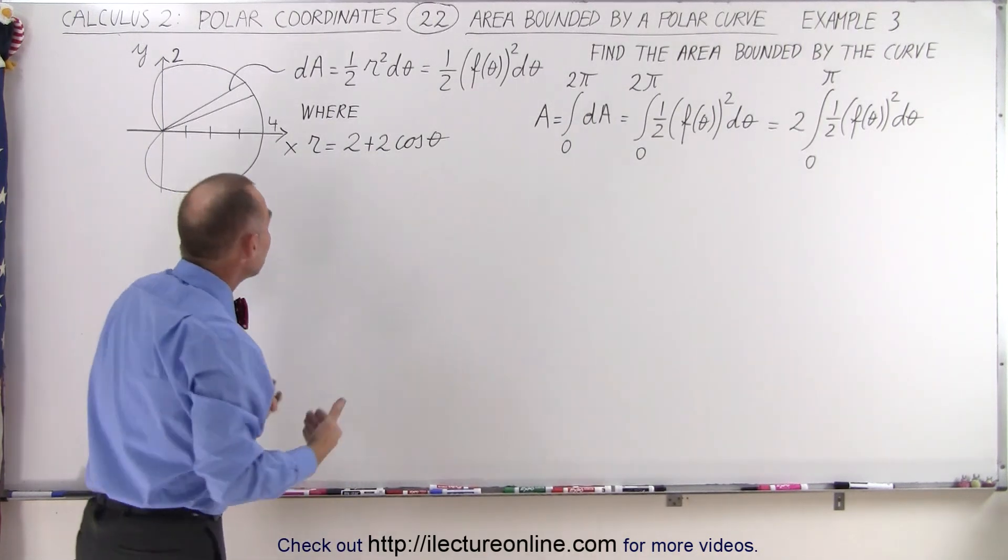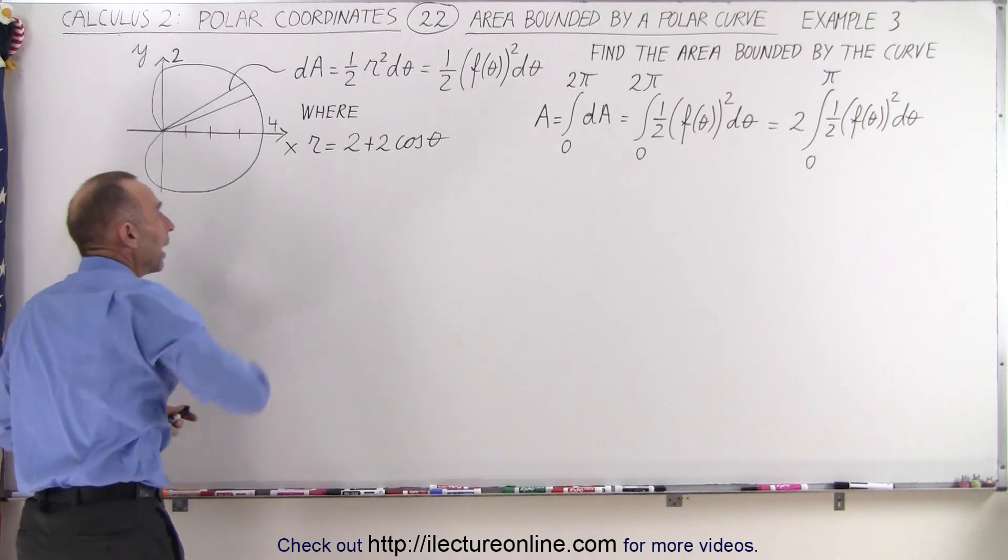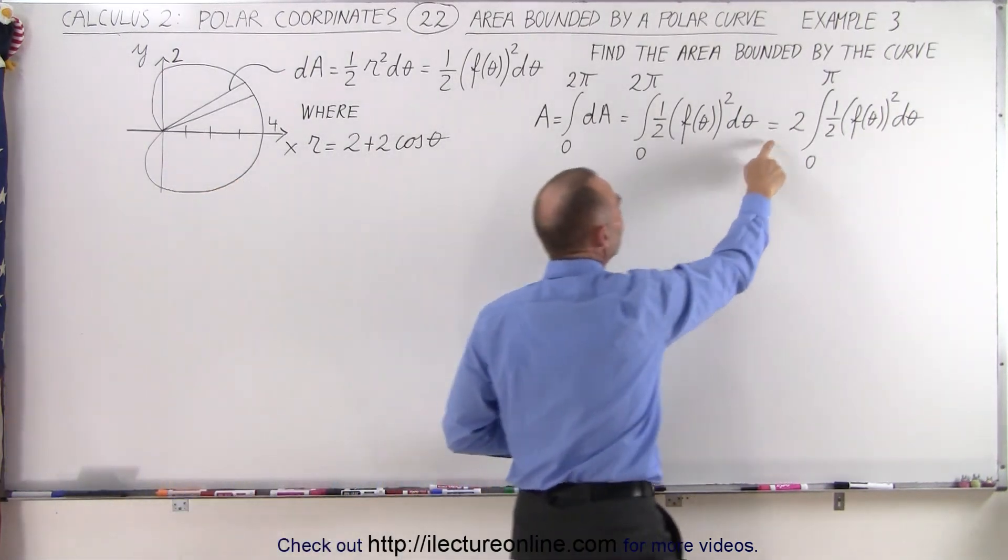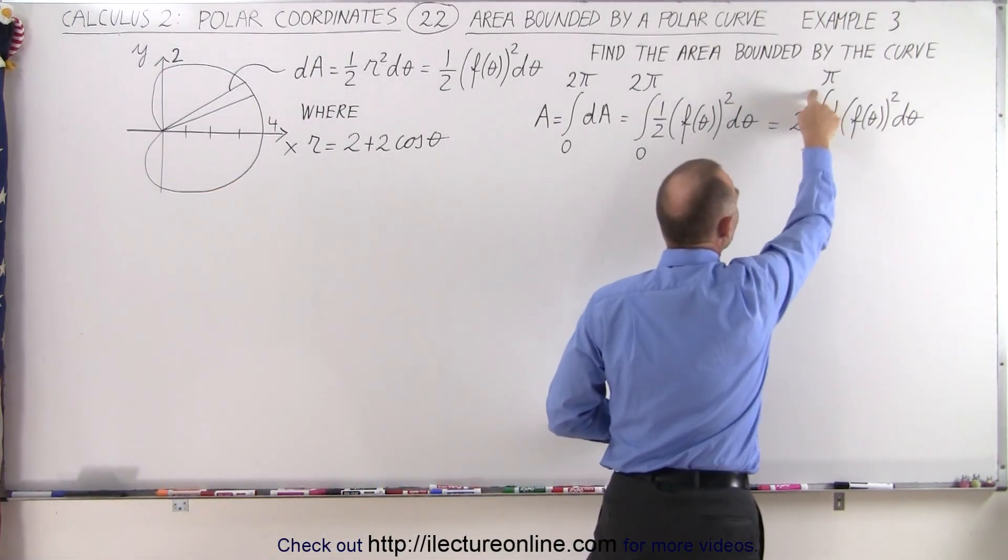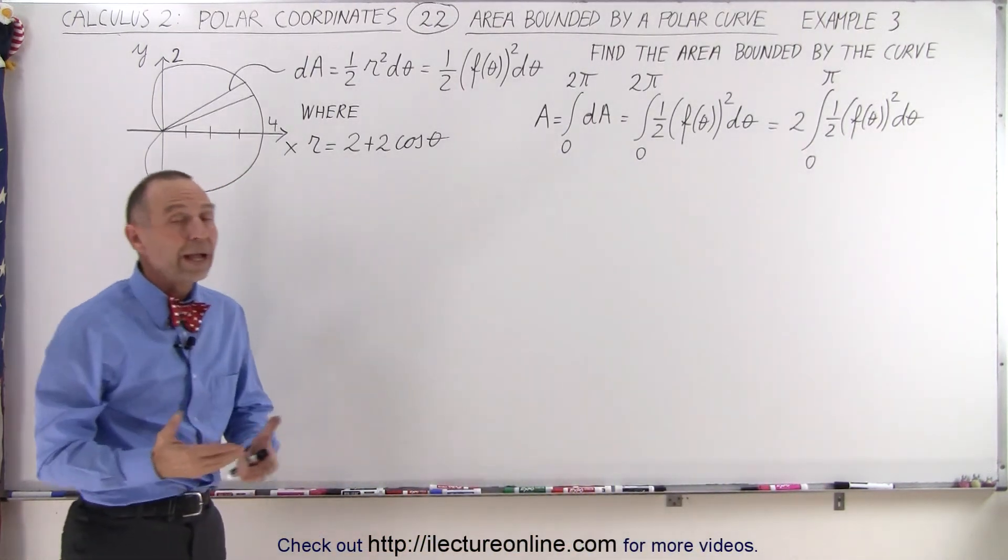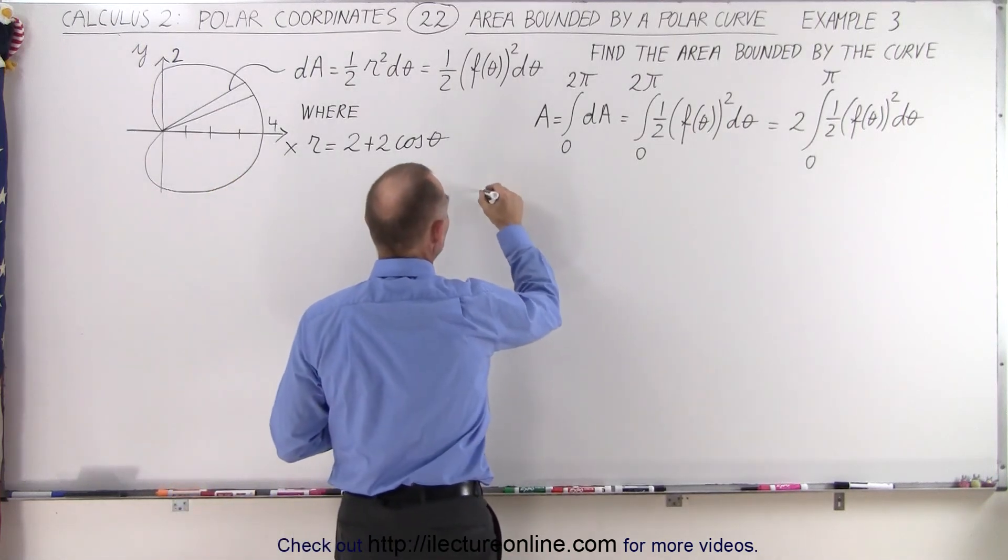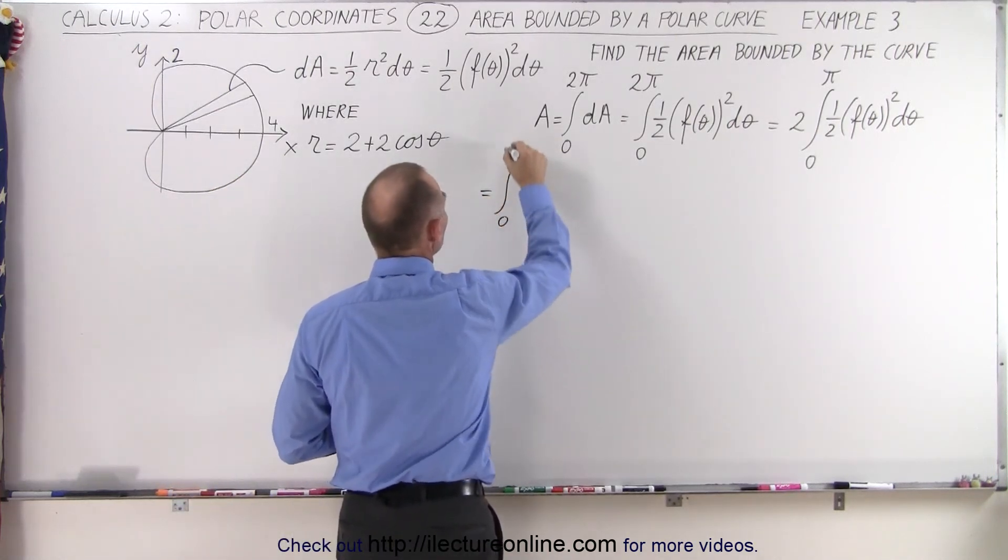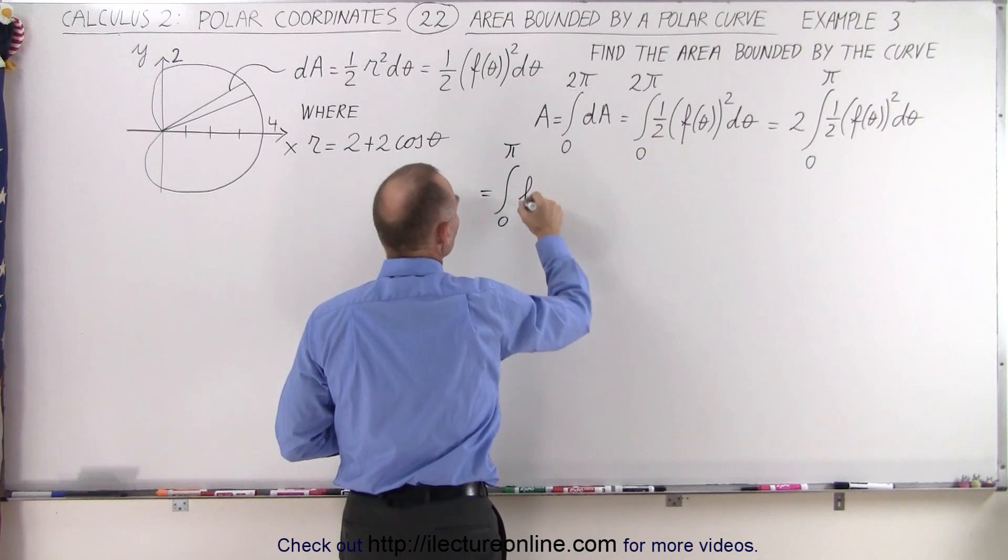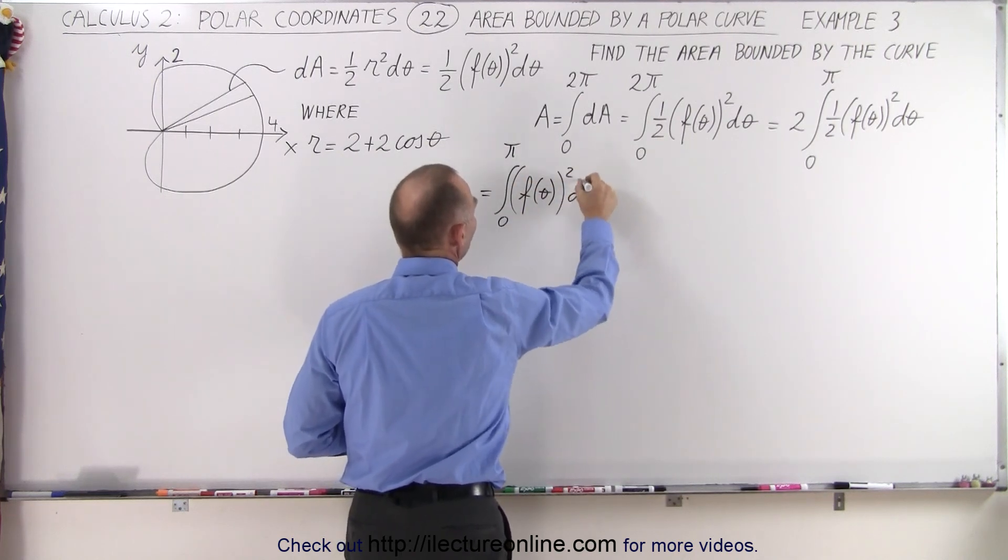But because of the symmetry, it may be easier just to integrate over just half the area and then double that. So we can say it's twice the integral from 0 to pi of that same integrand. Now, 2 times 1 half is 1, so that becomes equal to the integral from 0 to pi of the function of theta squared times d theta.